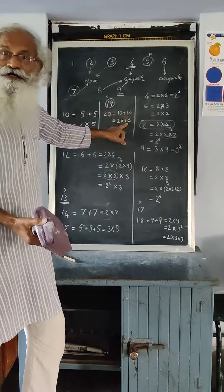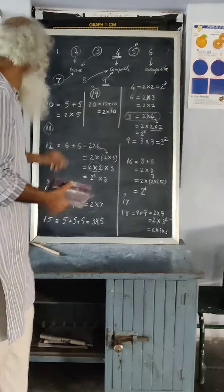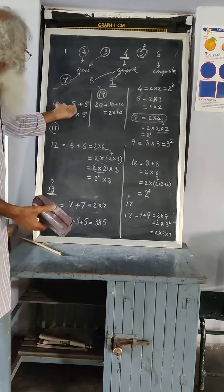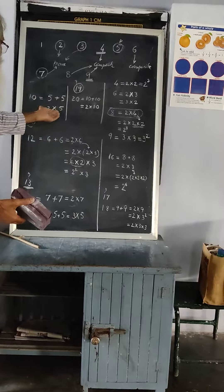10 when I factorize, you got 10 if you factorize it: 2 times 5. So, 2 times 5.